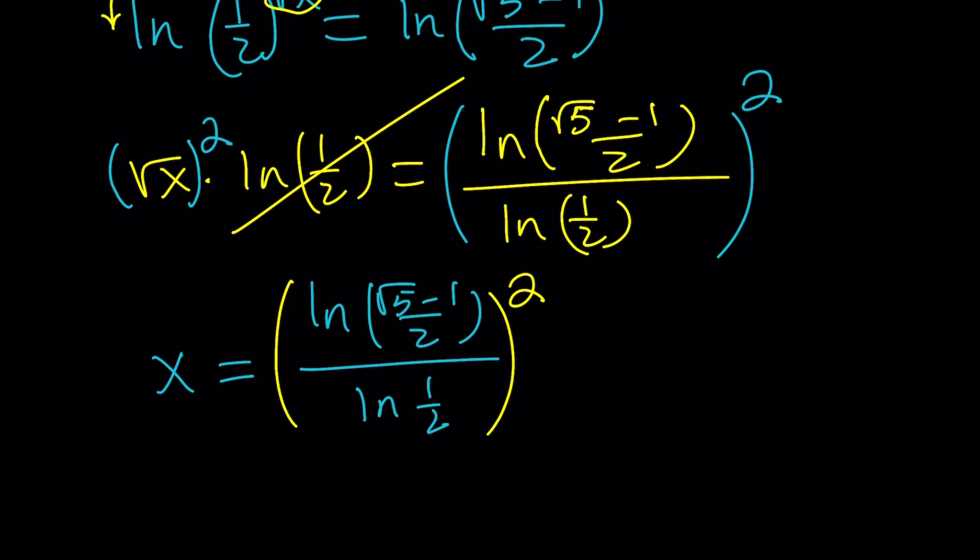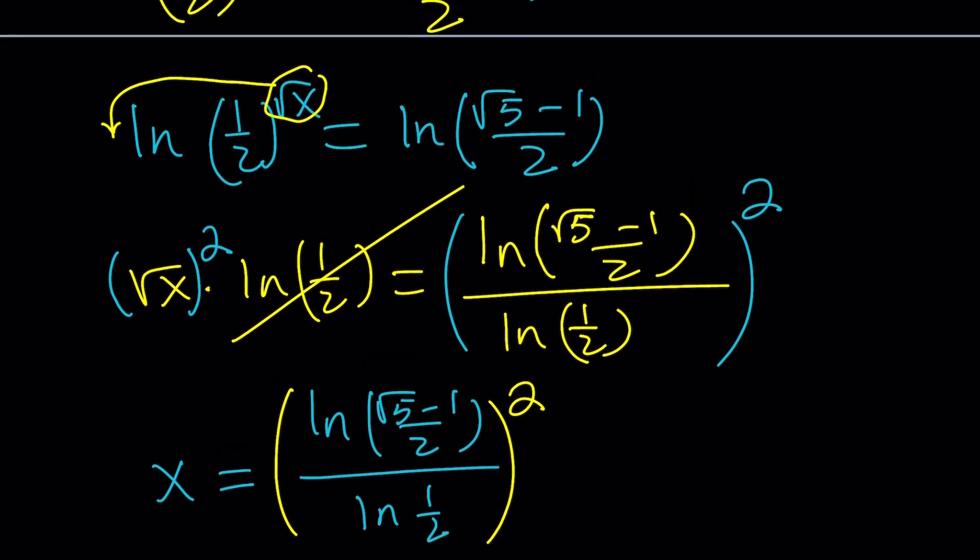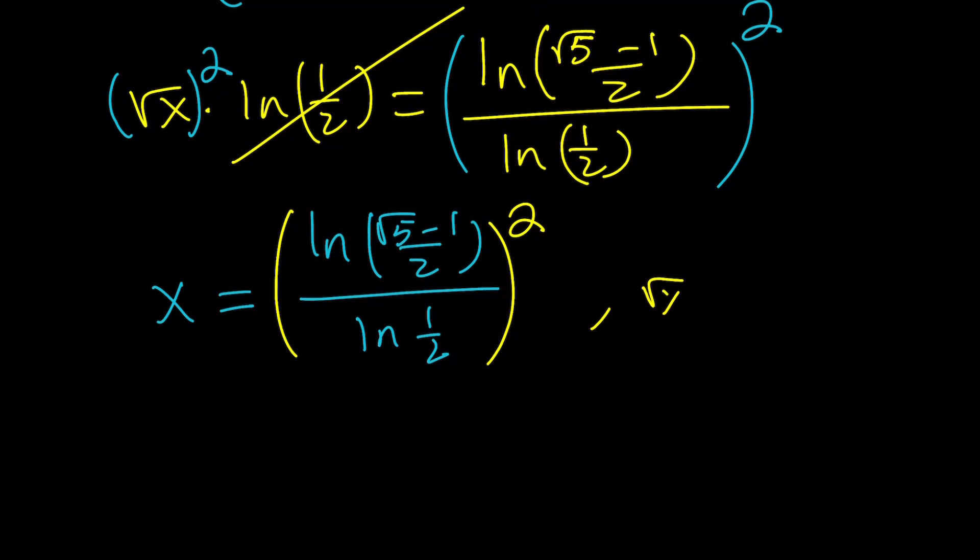By the way, one thing to be careful about is we said that square root of x is equal to this. Square root of x was equal to ln of root 5 minus 1 over 2 divided by ln of 1 half. How do we know that this is a positive quantity? Because if it's not, then we're not going to have a real solution because square root of x is greater than or equal to 0. Well, we know this is a positive quantity because this is negative and that's negative. How do we know? This is less than 1 and this is less than 1. So, that's a positive quantity. I checked it for you. That's positive. So we got a good solution.